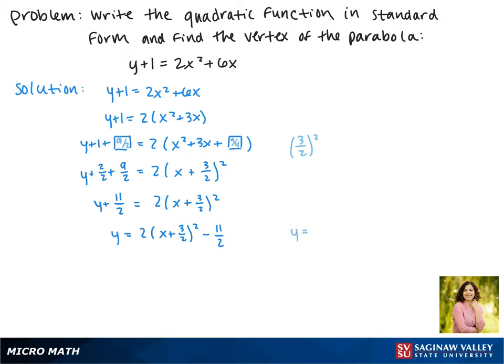Remember that standard form is y equals a times x minus h squared plus k, where the vertex is h, k. So we have to take the opposite of our h term, which makes it negative 3 halves, and then our k term is negative 11 halves. So our vertex is at negative 3 over 2, negative 11 over 2.